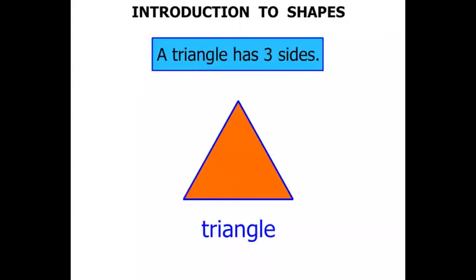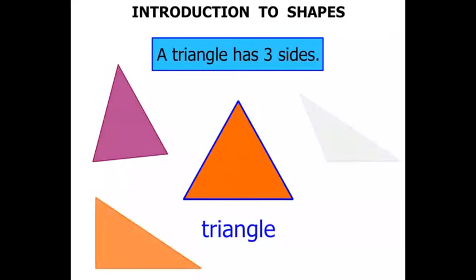Now this particular triangle, well those sides look equal. But guess what? A triangle can have unequal sides as well, like this one, or this one, or this one, or this one. As long as it's got three sides, and of course again, those sides need to be straight.